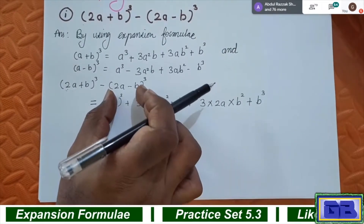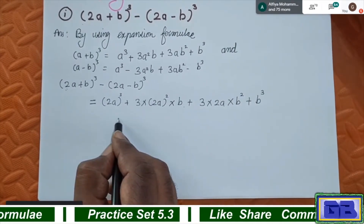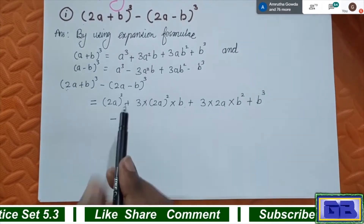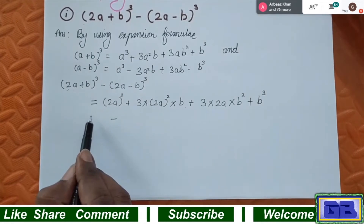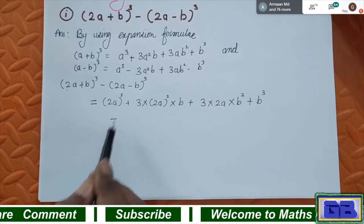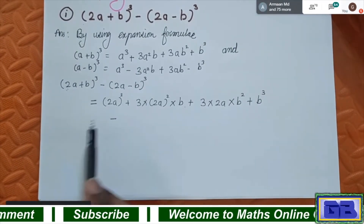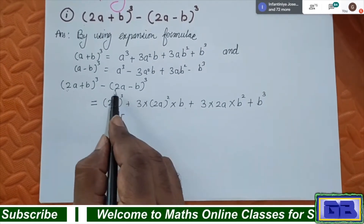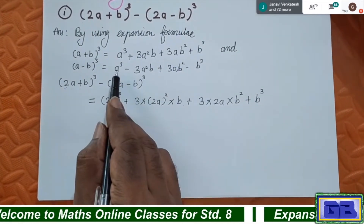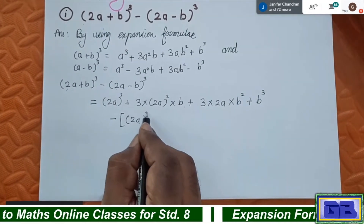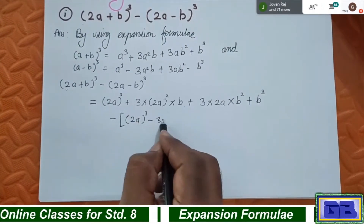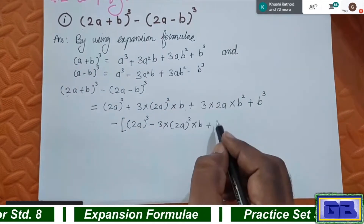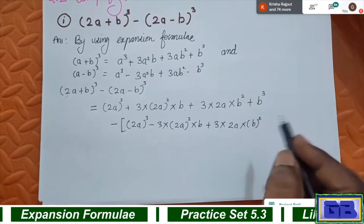Now a minus sign is there, so write the expansion of the second bracket on the next line. Leave one finger space from your margin so it is easy to understand this is continuation of the first step. Use the minus formula for the second bracket: (2a)³ - 3 × (2a)² × b + 3 × 2a × b² - b³.